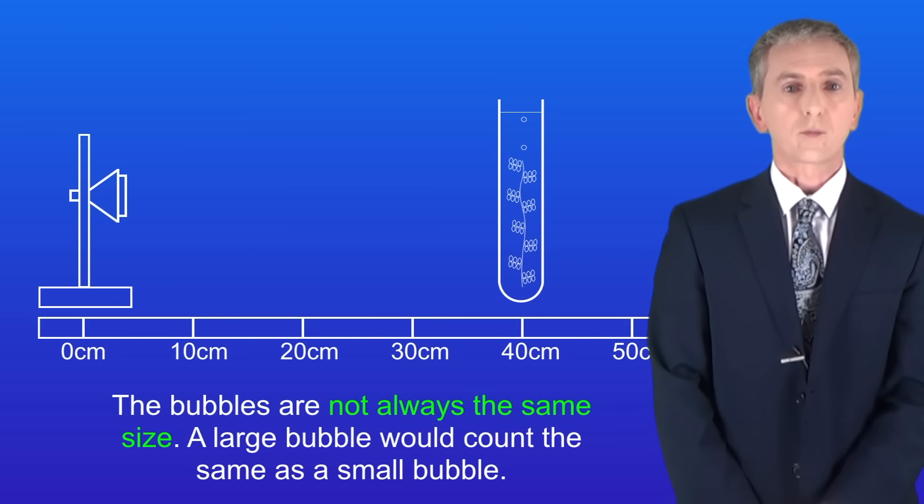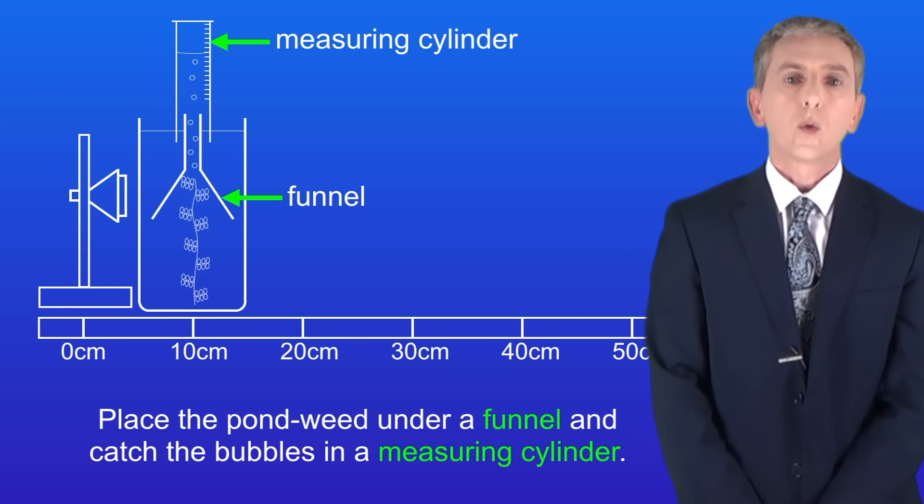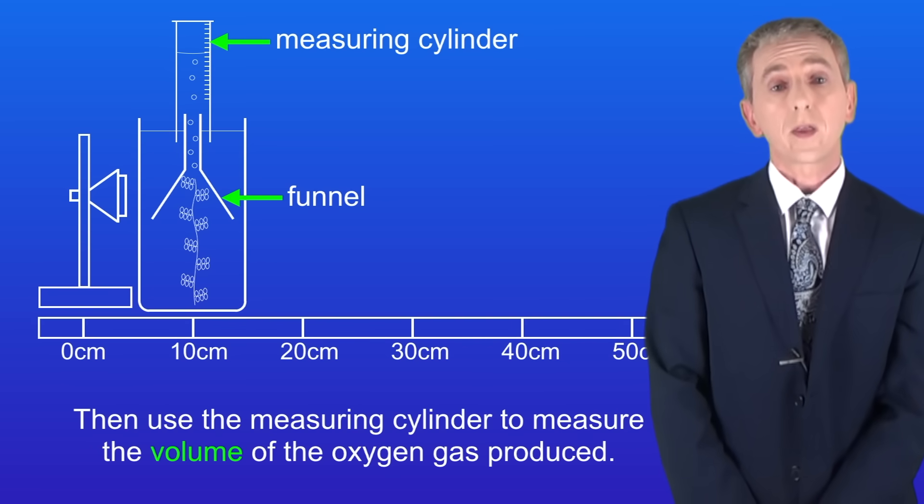We can solve these problems by measuring the volume of oxygen produced instead of counting bubbles. We place the pondweed under a funnel and catch the bubbles in a measuring cylinder filled with water. We then use the measuring cylinder to measure the volume of oxygen produced.